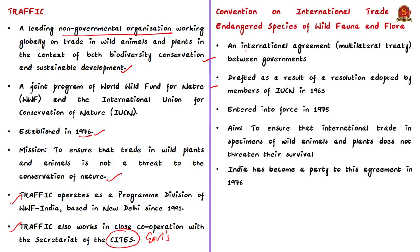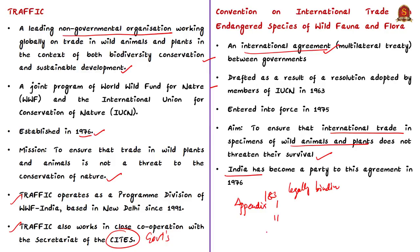CITES is an international agreement between governments to ensure that international trade in wild animals and plants does not threaten their survival. CITES is legally binding on the parties — the states that have joined — and currently has around 183 parties. Species covered by CITES are listed under three appendices according to the degree of protection needed. Appendix 1 includes species threatened with extinction — trade in these is permitted only in exceptional circumstances. Appendix 2 includes species not necessarily threatened with extinction but whose trade must be controlled to avoid utilization incompatible with their survival. Appendix 3 includes species for which a range country has asked other parties to help in controlling international trade.